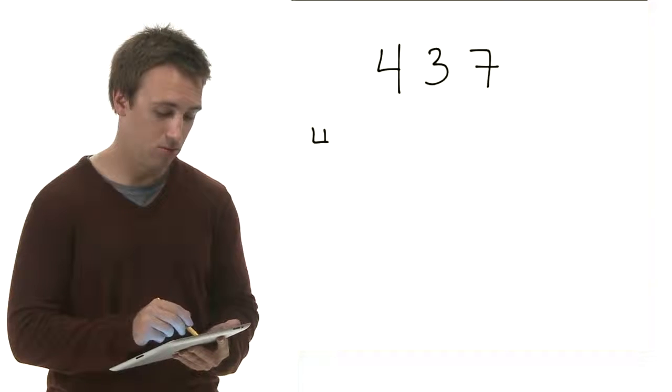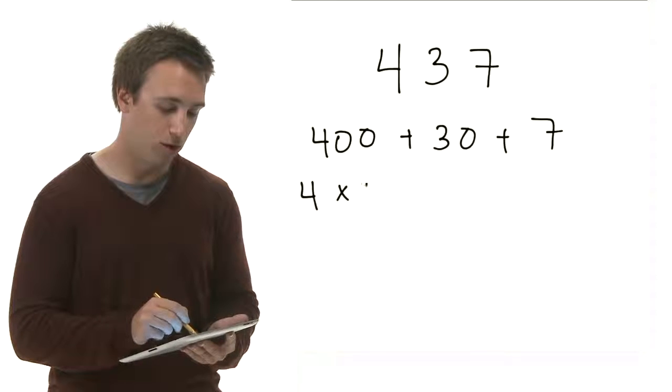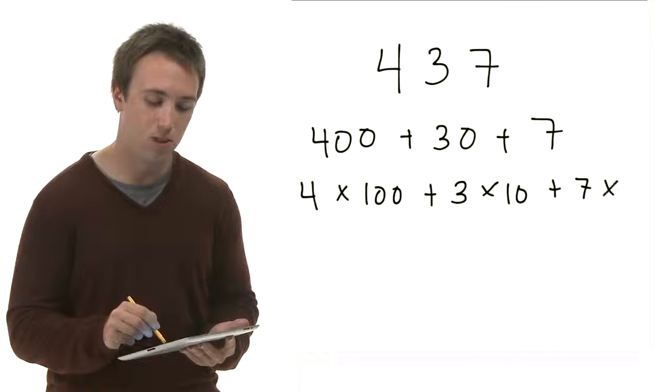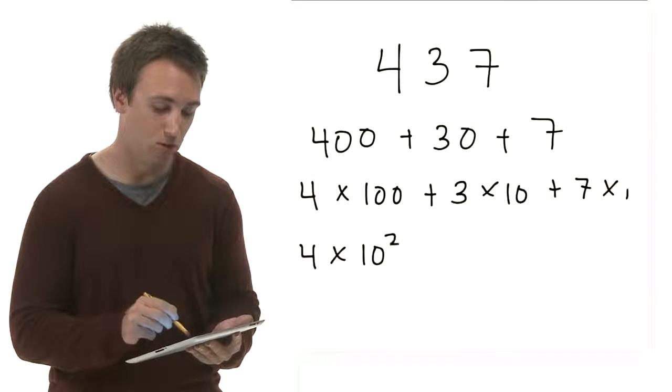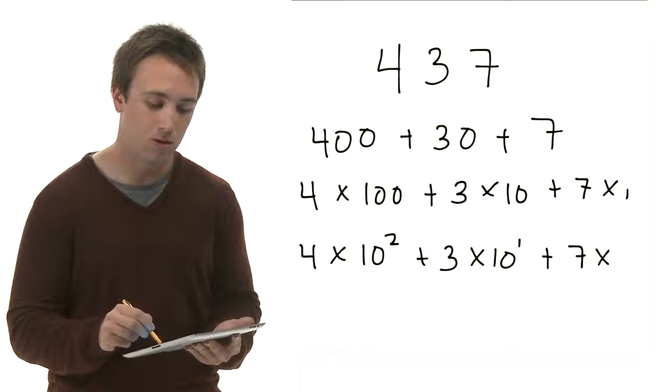Let's look at the number 437, written in decimal notation, to understand why. We can first break up 437 into 400 plus 30 plus 7. We can take it apart even more, so that we've got 4 times 100 plus 3 times 10 plus 7 times 1. Remember learning about the 1's place, the 10's place, the 100's place, and so on? This is exactly where that comes from. And finally, we can see how we've got a bunch of powers of 10 embedded in here: 4 times 10 to the 2, plus 3 times 10 to the 1, plus 7 times 10 to the 0.